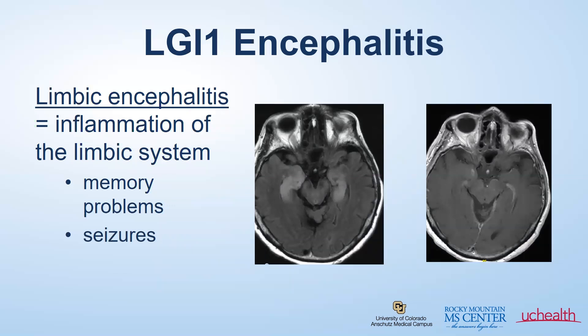Limbic encephalitis is a very specific type of autoimmune encephalitis that causes inflammation of the limbic system. This is located in your temporal lobes of the brain and can cause specific symptoms of short-term memory issues and seizures. Often the MRI is abnormal, showing changes and inflammation in the bilateral temporal lobes, shown here circled in red with the red arrow. This is essentially a breakdown of the blood-brain barrier due to active inflammation, and we see this contrast enhancement.